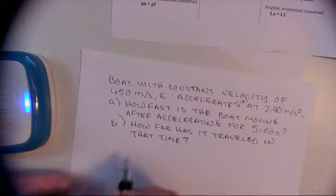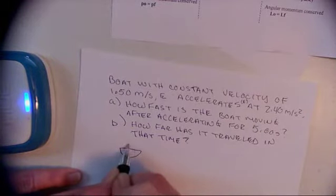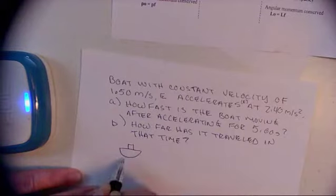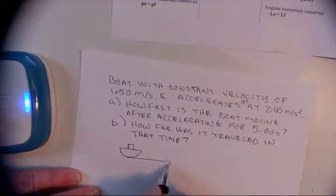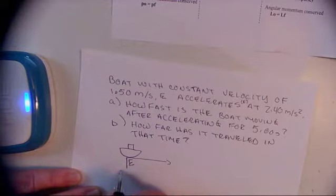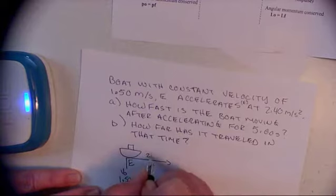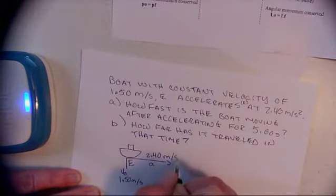Let's draw a picture of what this boat is doing. It's more like Noah's Ark than a boat, that's fine. So it is going in this direction, north, south, east, west. And its acceleration, call this v-naught because we're told it starts at a constant velocity at 1.50 meters per second, and this is going to be our acceleration of 2.40 meters per second squared.